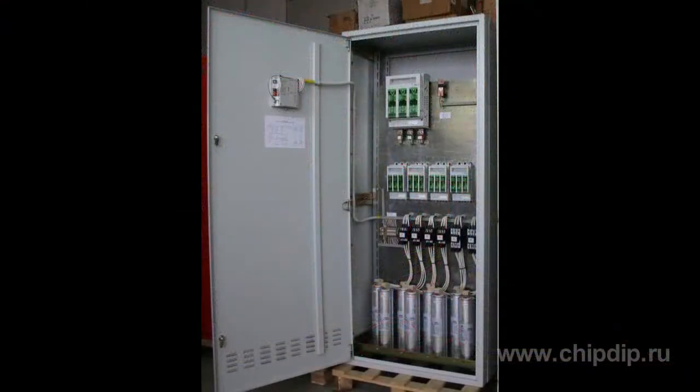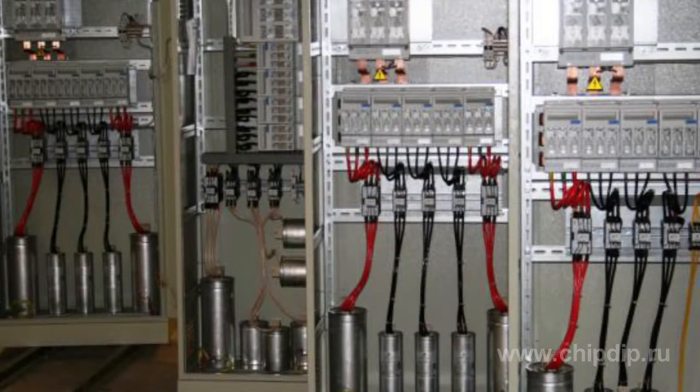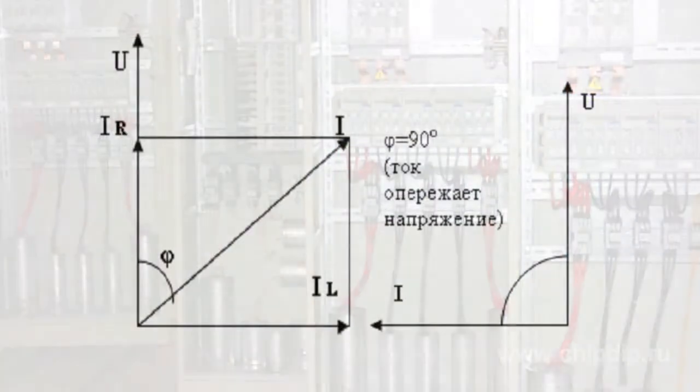Reactive power compensation units are electrical receivers with capacitive current. During operation they generate advanced reactive power — that is, the current leads the voltage — to compensate for the lagging reactive power generated by an inductive load. Compensation devices are connected across the load, so reactive power oscillates locally between the load's induction coils and the compensator, rather than between the generator and the load.